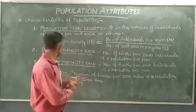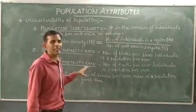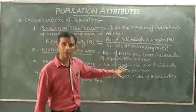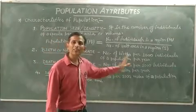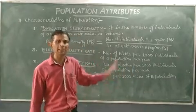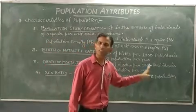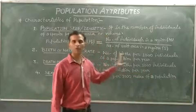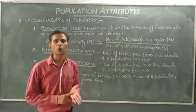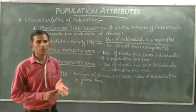Likewise, death rate or mortality rate is the number of deaths per 1000 individuals of a population per year.